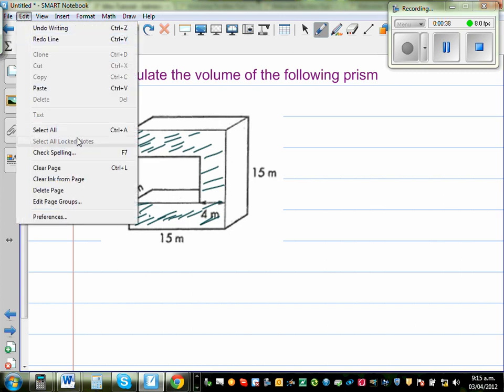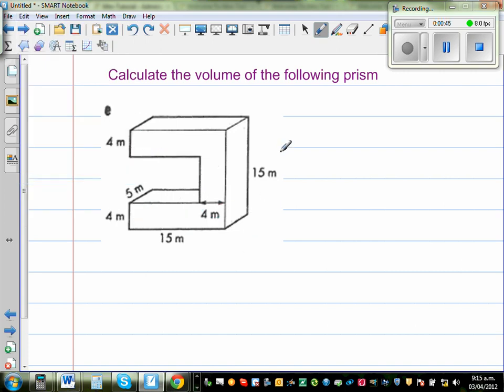So now to find the volume of this shape, what we are going to do is we are going to cut this into 3 rectangles. So let me cut this. So this is one rectangle. So the length, this is 15 meters here. So this will also be 15 meters.